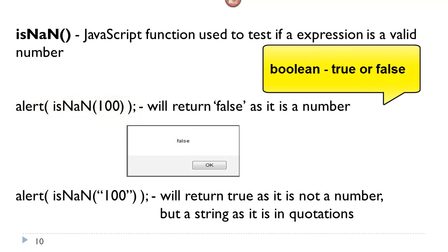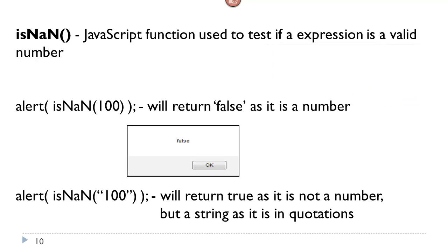This is an example of a Boolean value being returned — it's either going to return true or false. Now let's take a look at the second alert statement. isNaN, and I have the 100 in closing quotations. Remember, whenever we have something in quotations, that is technically a literal or a string. So now, is this a number? No, it's not a number, so it returns true. Because isNaN tests whether it is not a number — and so the alert will come back true.